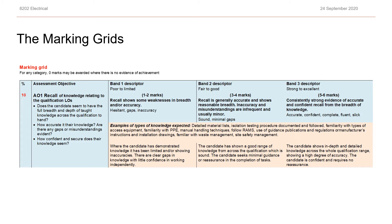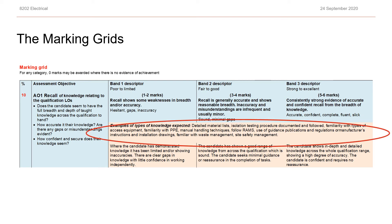Once all the candidate record forms, or CRFs, have been populated with the relevant evidence, it's time to consider marks for that evidence. This is done by referencing the marking grids. On the marking grid, you can see examples of knowledge expected for that particular AO. Looking again at AO1, which is recall, you can see that examples include detailed material lists, isolation procedures documented and followed, and so on. Once you see what's relevant to that AO, look at the evidence on the CRF and see which band it falls in.